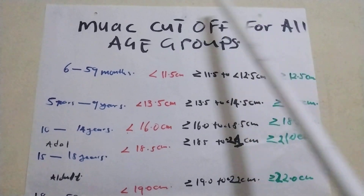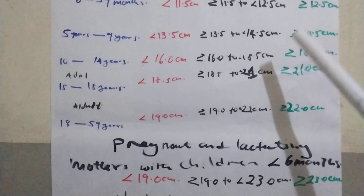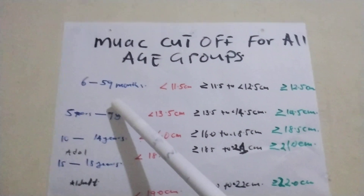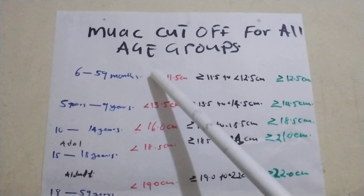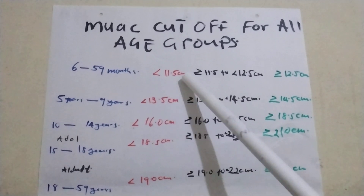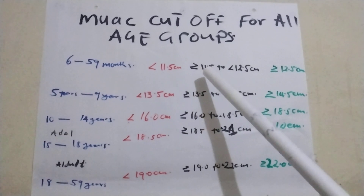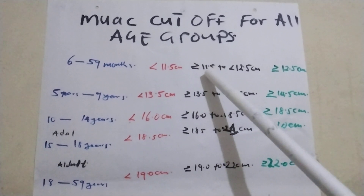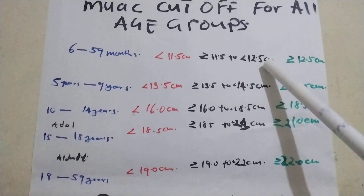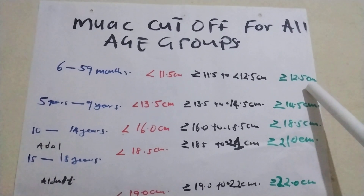This works for all ages from 6 months up to 59 months and above. Starting from 6 months to 59 months: SAM (severe acute malnutrition) is less than 11.5 centimeters. MAM (moderate acute malnutrition) starts from 11.5 centimeters to 12.5 centimeters. Normal is 12.5 centimeters and above.